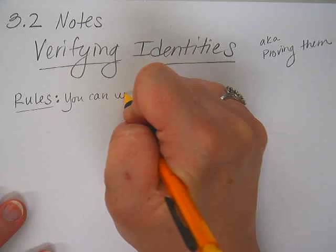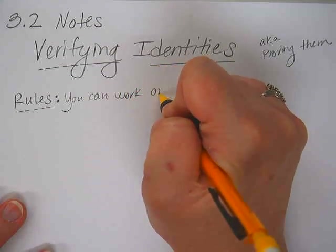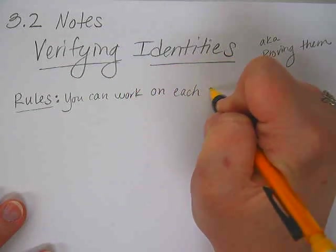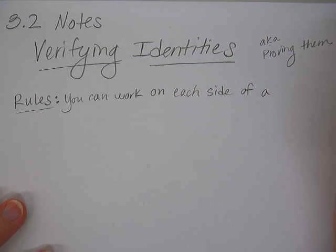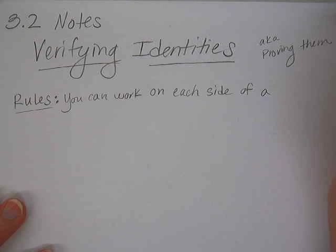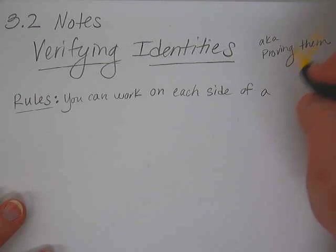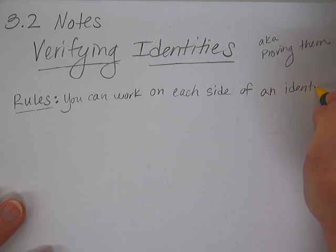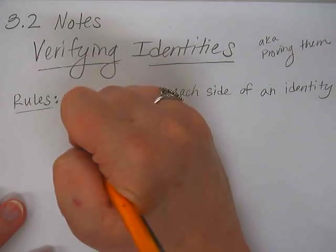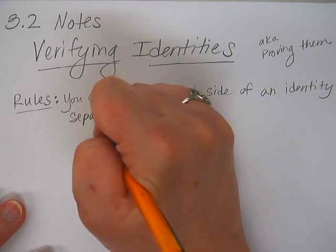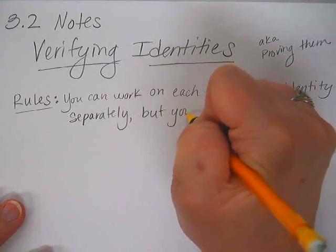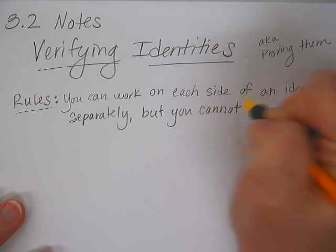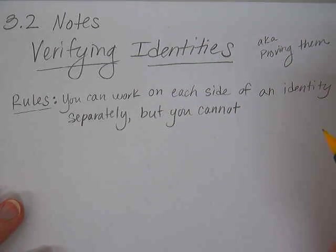You can work on each side of an identity separately, but you cannot use the rule that says what you do to one side you do to the other.